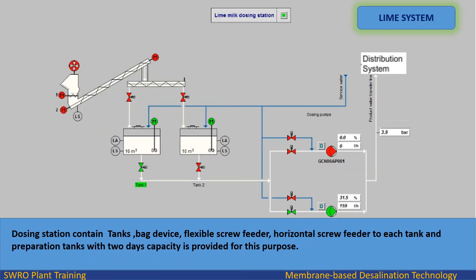The lime milk is prepared in the lime dosing station, which consists mainly of the following equipment: a bag device with mixer, an exhaust fan, a flexible screw feeder with level switch, a horizontal screw feeder to divert lime powder to the tank, two dosing pumps with 100% capacity each. It is required to flush regularly the dosing lines upstream and downstream of the pumps.